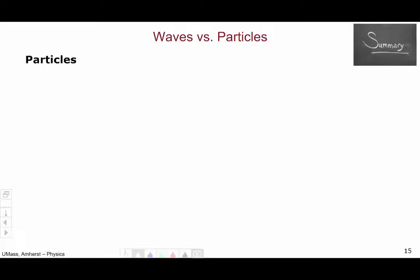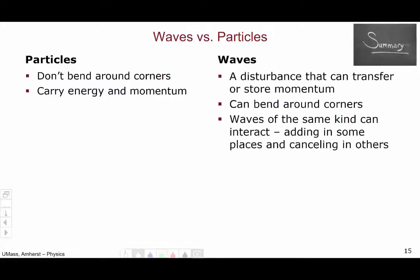So to summarize, particles are localized in space. They don't bend around corners but can carry energy and momentum. Waves, on the other hand, are spread out in space. There's some kind of disturbance that can transfer or store energy and momentum. However, waves, unlike particles, can bend around corners. And also, waves can interact with themselves or other waves of the same kind through this phenomenon of interference that was shown in the little water waves video. This concludes this video.